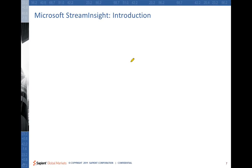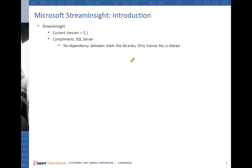Let's move on to what Stream Insight is about. Stream Insight is from Microsoft. It's a platform for building complex event processing applications. The current version of Stream Insight is 2.1, released last month, and unlike any minor version updates, this has a set of significant changes over 2.0 like the development model. We shall see that in the upcoming slides.